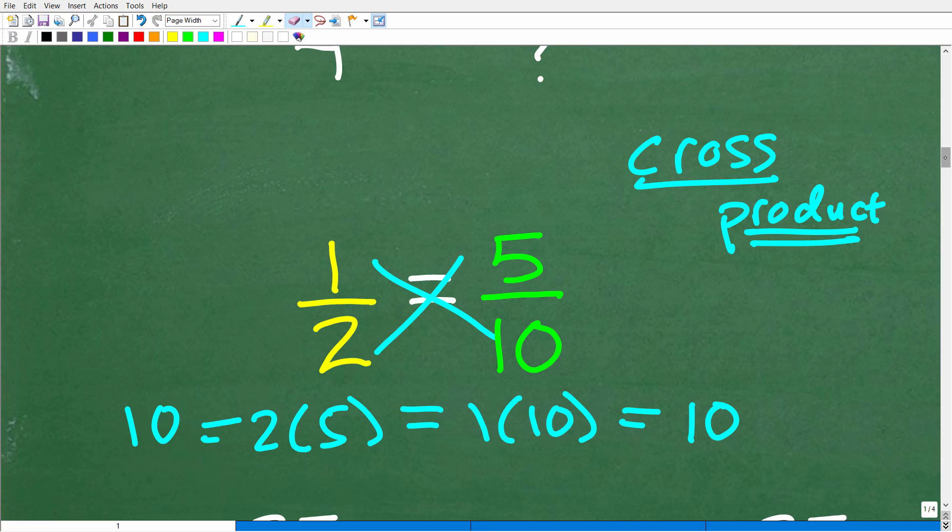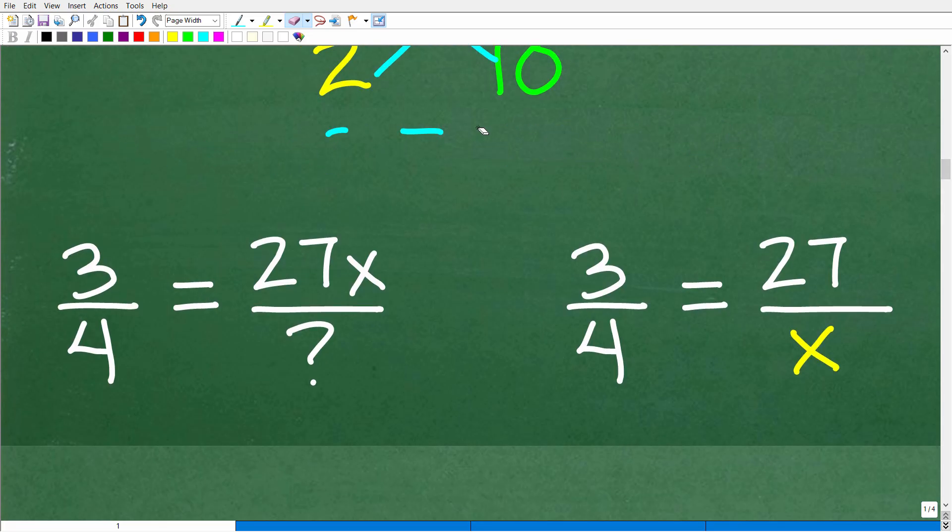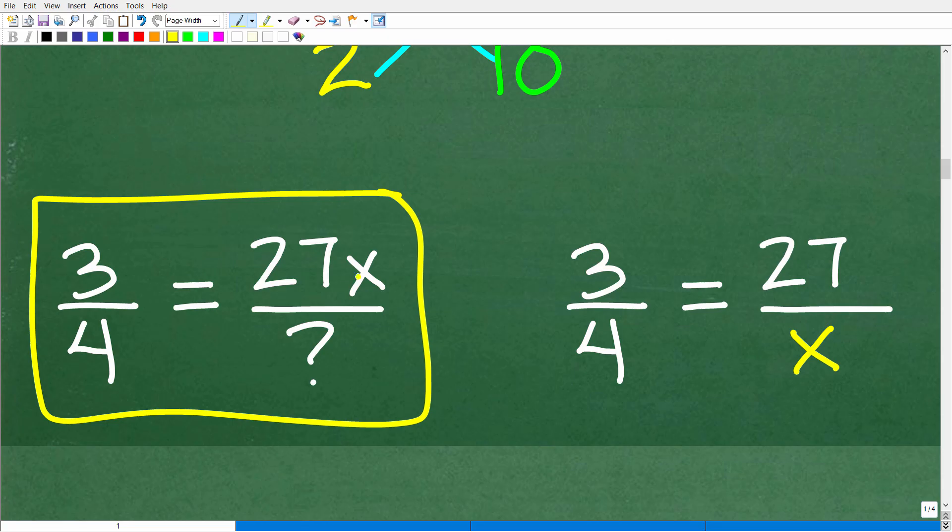Let's use the cross-product to look at this question. We have 3 fourths equal to 27x over some denominator. Let's get rid of this x for a second. If this is our question, then we're looking for the denominator of this simple proportion, and you can represent any number you're looking for with a variable. Let's call that variable an x.